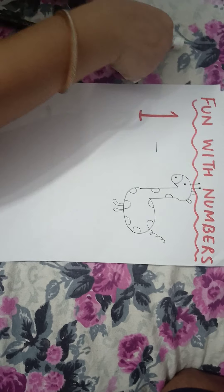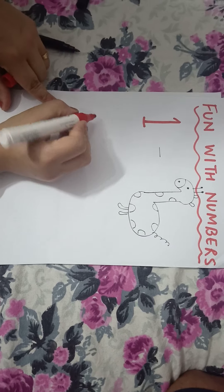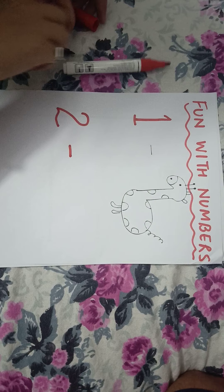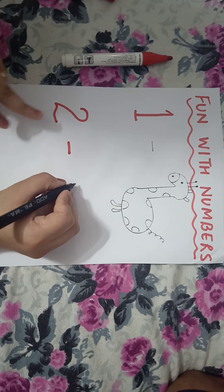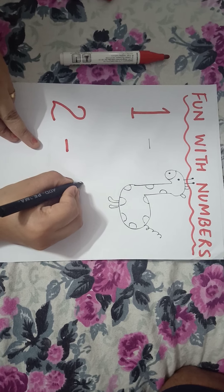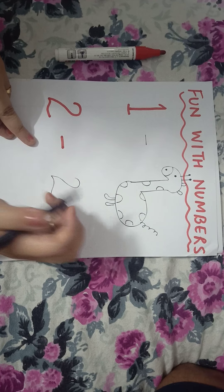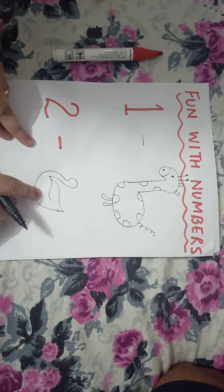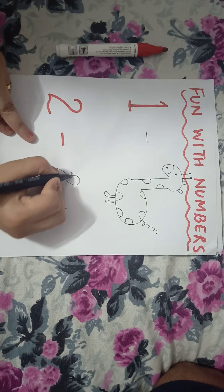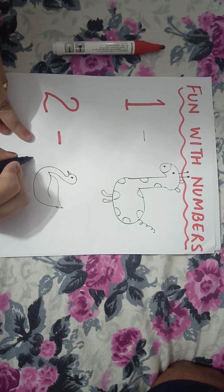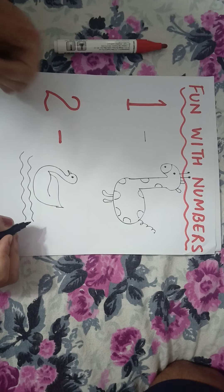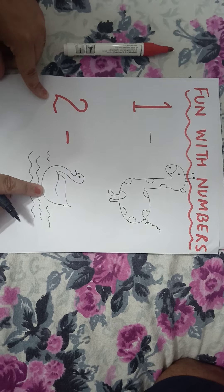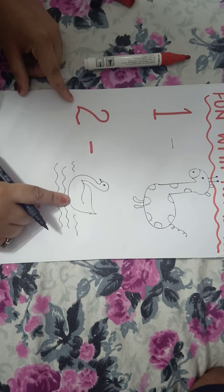Now, number 2. Write number 2 here with the help of a sketch pen or marker, and now we will make another animal using number 2. Can you see this? A duck! Is it beautiful? With the help of number 2, we have made a duck.